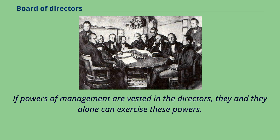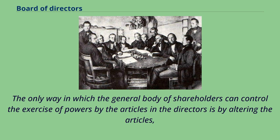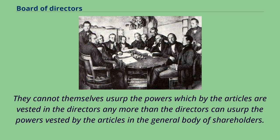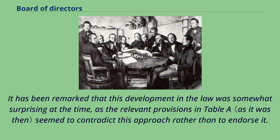The only way in which the general body of shareholders can control the exercise of powers vested in the directors is by altering the articles, or, if opportunity arises under the articles, by refusing to re-elect the directors of whose actions they disapprove. They cannot themselves usurp the powers which by the articles are vested in the directors any more than the directors can usurp the powers vested in the general body of shareholders. It has been remarked that this development in the law was somewhat surprising at the time, as the relevant provisions seemed to contradict this approach rather than to endorse it.